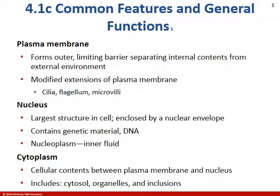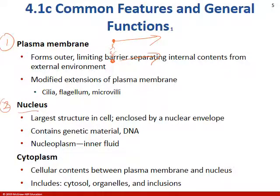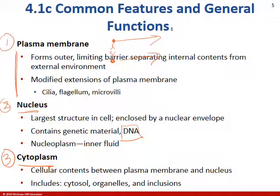Here are the common features of a cell. All cells have a plasma membrane made up of the phospholipid bilayer — a bunch of phospholipids forming a double layer. All cells have a nucleus which houses or contains the DNA. And third, they have cytoplasm — the substance between the plasma membrane and the nucleus.